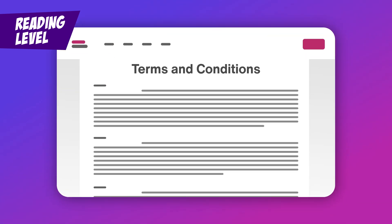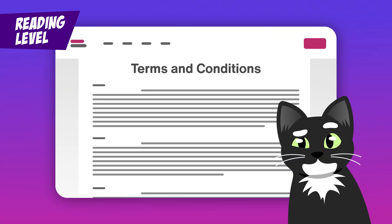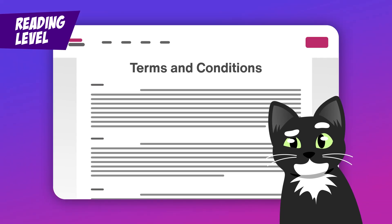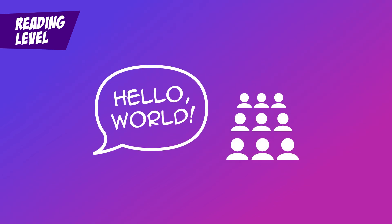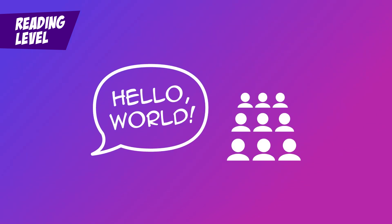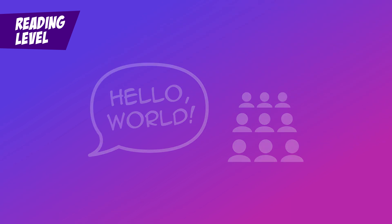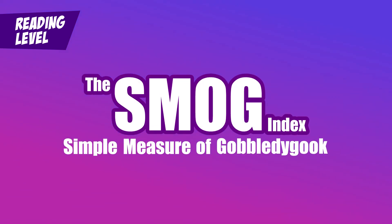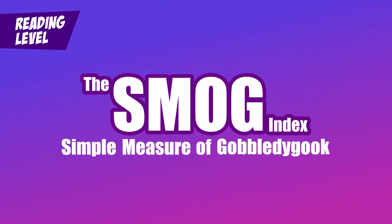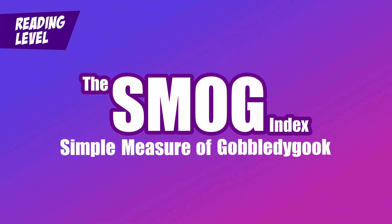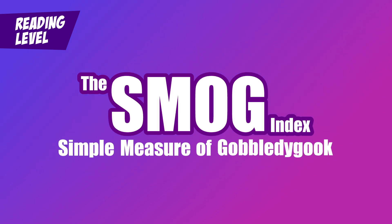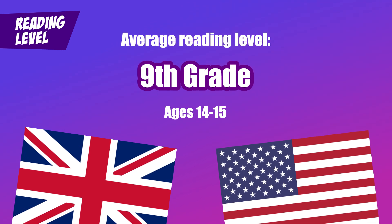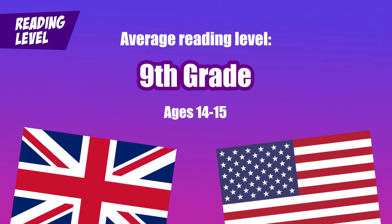Think about the last time you read something with language so dense you felt like you needed a dictionary to get through it. Reading level is all about making sure your content isn't one of those head-scratchers. The goal is to write so that readers of all backgrounds and abilities can easily understand what you're saying. One tool to check readability is the SMOG index — that's the Simple Measure of Gobbledygook. No, I'm not kidding. It estimates the years of education needed to understand your text based on the number of complex words. Studies suggest that the average reading level in both the US and the UK is about ninth grade, or around age 14 to 15.